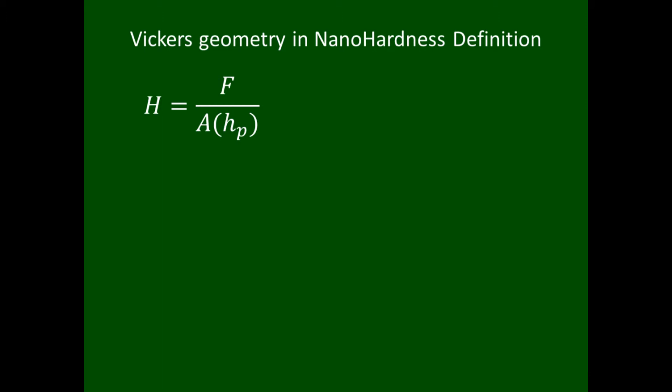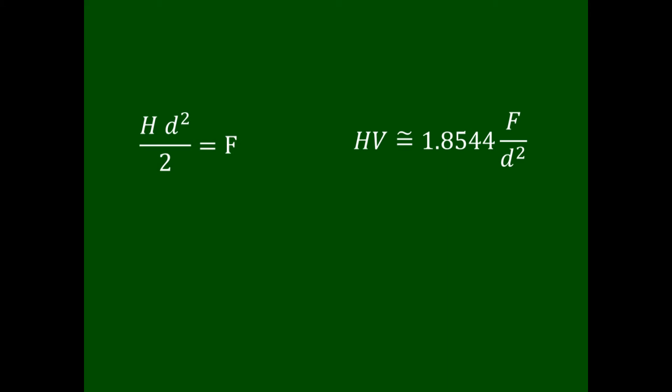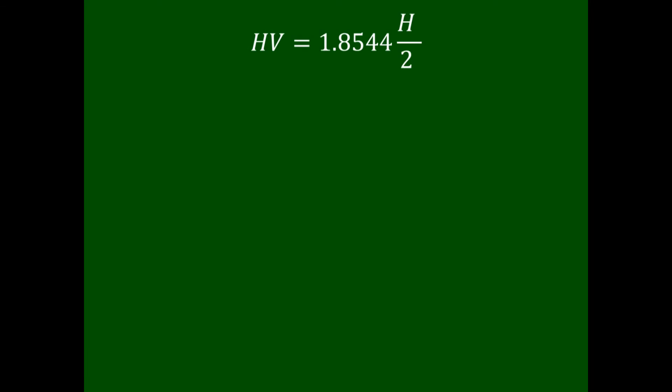Because Vickers and Berkovich tips are directly comparable, to convert the values from one hardness scale to the other, we simply define the hardness of a Vickers test as we do in nano indentation. So the hardness is found to be the peak force divided by the projected contact area. For our Vickers indenter tip, the projected area is simply d squared over 2. We find that the hardness by this definition is 2F over d squared, given in units of Pascal. Solving for F, we find that F equals H times d squared over 2. We can then directly plug this into our Vickers hardness equation and cancel out the d terms, giving us an equation for the conversion from Vickers to nano hardness.